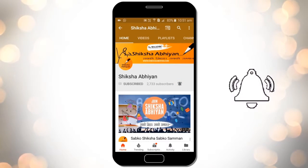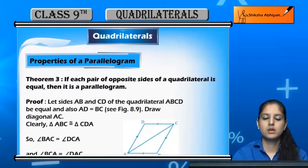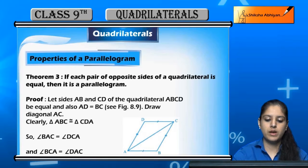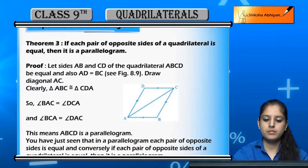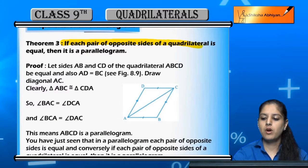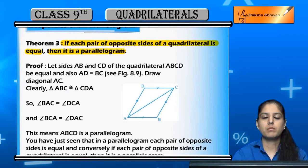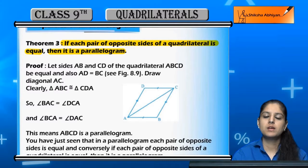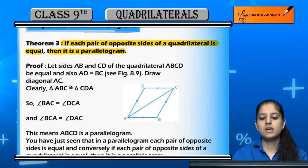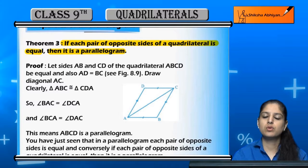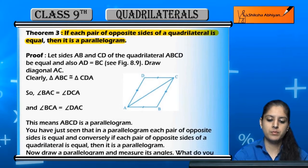Now, the third property of a parallelogram: if each pair of opposite sides of a quadrilateral is equal, then it is a parallelogram. We have seen that if it is a parallelogram then opposite sides are equal. Now we will prove that if opposite sides are equal in a quadrilateral, then it is a parallelogram.